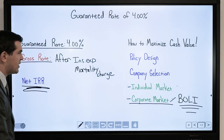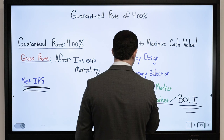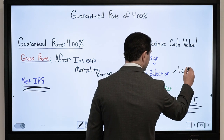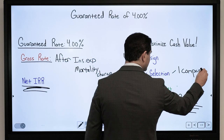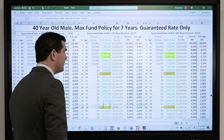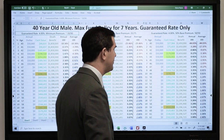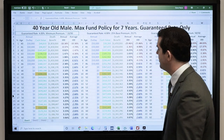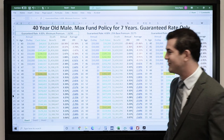What's it growing by? We're going to look at different policy designs with one company — one of the four major mutuals — on a 40-year-old male, same health rating on all examples. We're going to look at the guarantees.